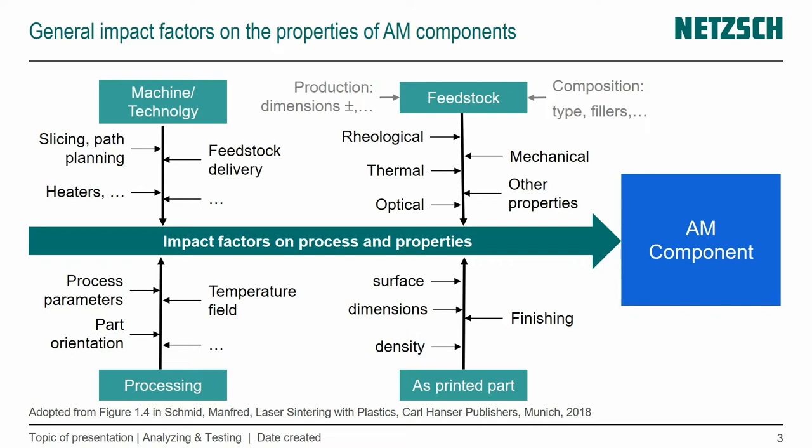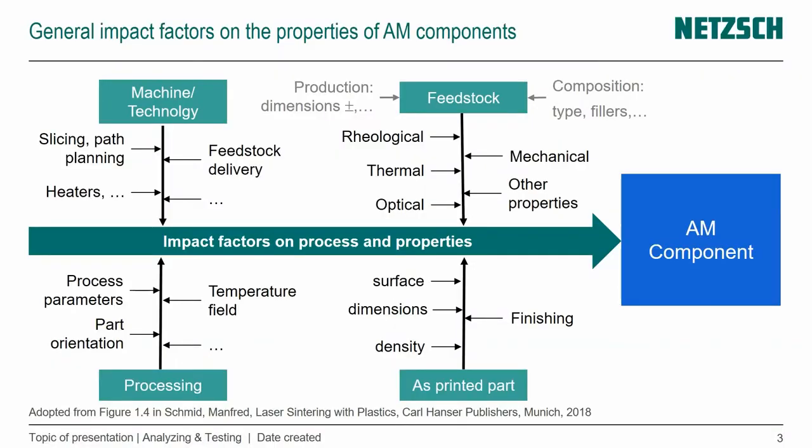When we look at processing, process parameters are always very important, but also the part orientation — I'll talk about that in one of the episodes to follow. And the temperature field: how does our material cool? If we have smaller sections, big parts, thin walls, all of that has an effect on warpage and the accuracy of the build that we're achieving.